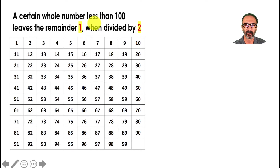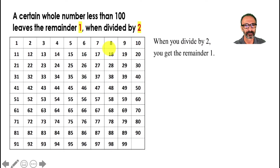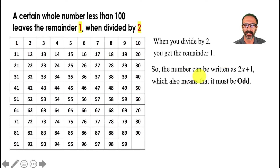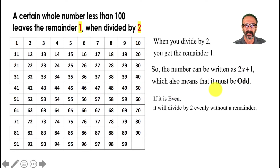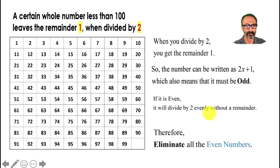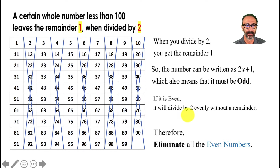The problem has multiple conditions listed as a paragraph, so let's take them one by one. First: a certain whole number less than 100 leaves a remainder of 1 when divided by 2. When you divide by 2 and get a remainder of 1, the number can be written as 2x + 1, which means it must be odd. If it's even, it divides by 2 evenly without a remainder, so we eliminate all even numbers.